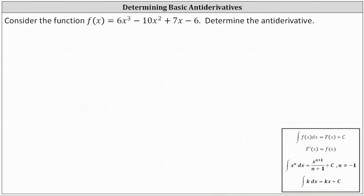If we're looking for the antiderivative of the given function f(x), we can express this as the indefinite integral of 6x³ - 10x² + 7x - 6 dx. The dx indicates the variable of integration.